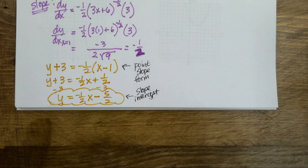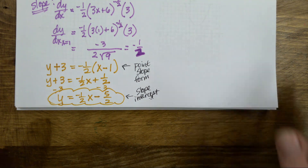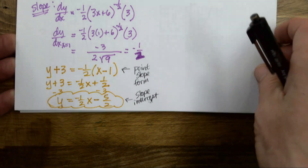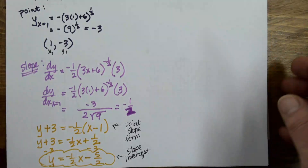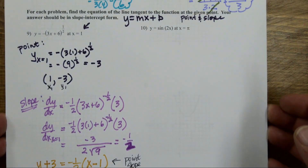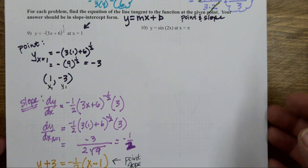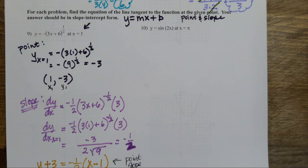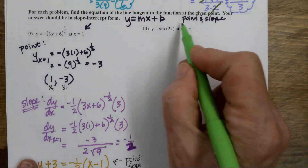One more left to do — a trig one. Sometimes they look scarier than they are. Don't worry about it — we can do it. Same thing, same concept, same steps, same procedure. I need a point and a slope.